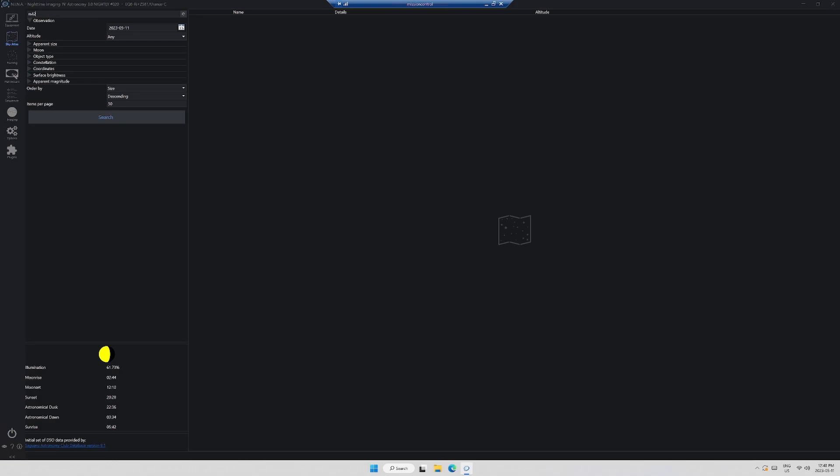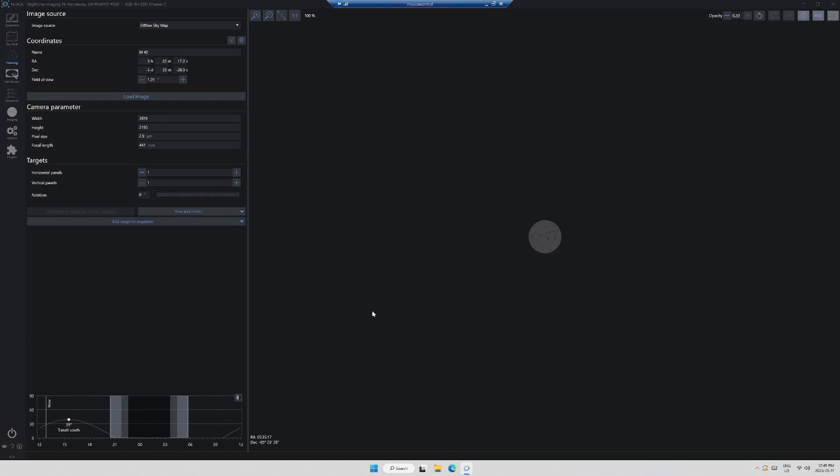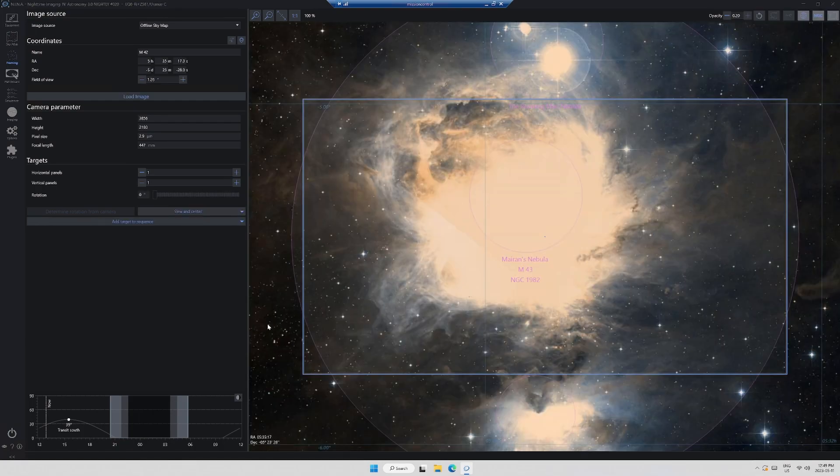The computerized mount, knowing where it is pointing, can slew in the direction that it thinks the object is. Once it gets in the general vicinity of that object, and it's usually quite accurate in its initial estimation, it'll take another picture and plate solve again. The software might need to repeat this process once or twice more, but it will, in fairly short order, have the telescope pointed exactly at the space object that we want to view.